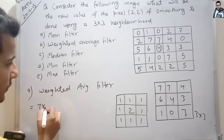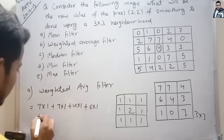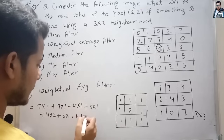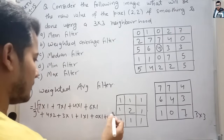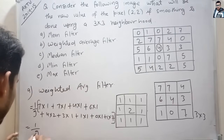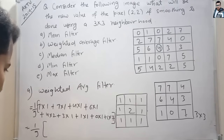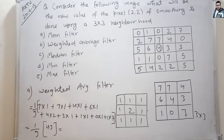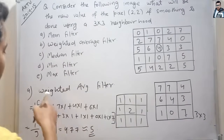So the weighted average filter calculation is: 7x1 + 7x1 + 4x1 + 6x1 + 4x2 + 3x1 + 1x1 + 0x1 + 7x1, divided by the sum of weights which is 9. This gives us 7 + 7 + 4 + 6 + 8 + 3 + 1 + 7 = 43, and 43 divided by 9 equals 4.77, which is approximately equal to 5. So the value of this pixel is 5 when we apply the weighted average filter.